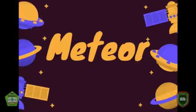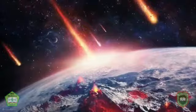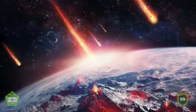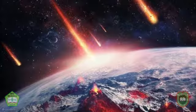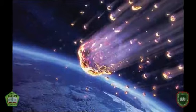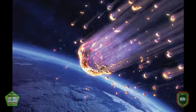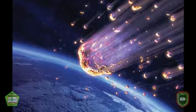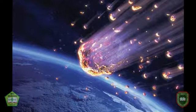A meteor is a fast-moving sky object with irregular trajectories. If you've heard the term 'falling star,' it's a meteor that can be seen by humans. The real event that happens when someone sees a shooting star is the meteor moving freely in the solar system being attracted by the Earth's gravitational force.